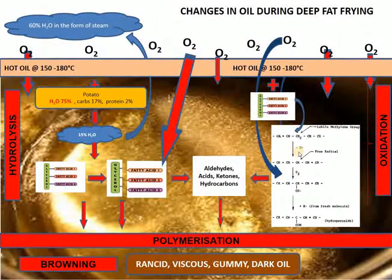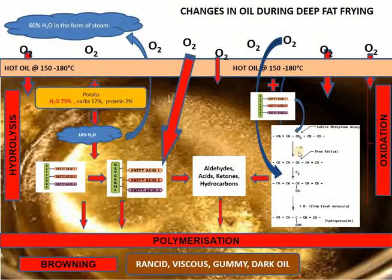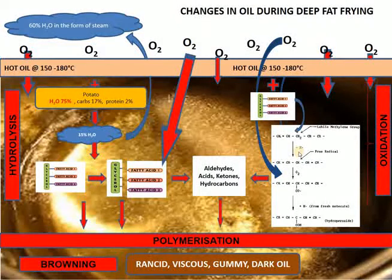The potato itself — the composition of the product being fried — also affects the quality of the oil. Potato contains 75% water, 17% carbohydrates, and 2% proteins. Those are the highest components, with others present in smaller quantities.